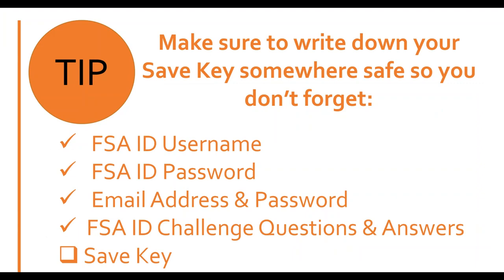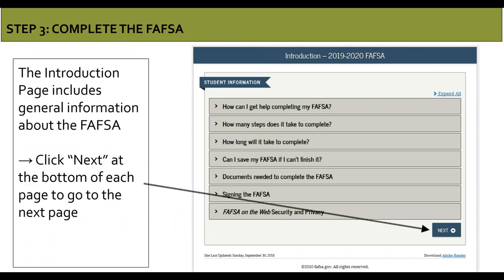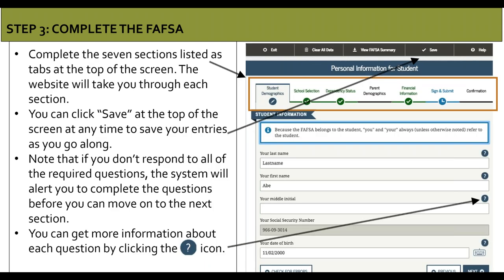The student must create a save key — another password — in case they don't fill out the application in one sitting. They can log back in within 45 days to complete and submit the FAFSA. Make sure to add the save key to the list of information they write down. There's also a general introduction page with overview information. At the top of the screen, you'll notice seven sections for the FAFSA, starting with student demographics and moving to sign and submit. There's a save button at the top, and a blue question mark icon for more detailed instructions on any question.